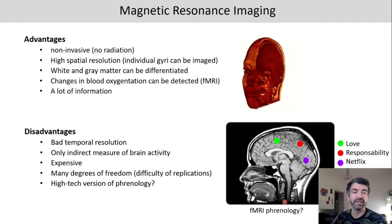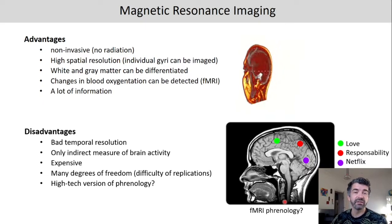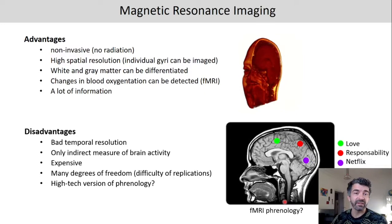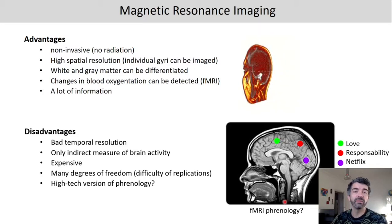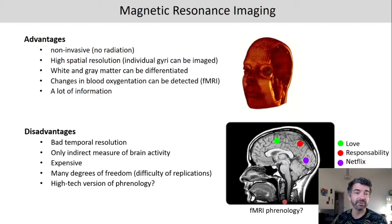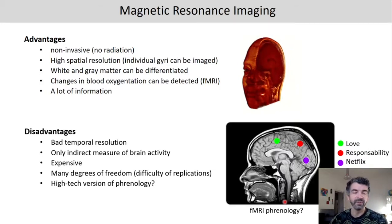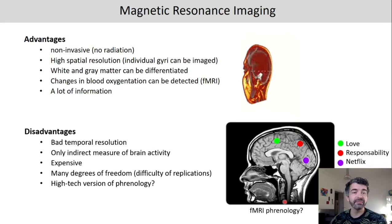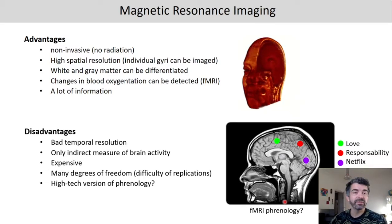Disadvantages of MRI are that we have bad temporal resolution. It is only an indirect measure of brain activity, meaning we're not looking at the activity of single neurons or neuron ensembles or even the summed activation of post-synaptic potentials like with EEG. Rather what we do is we look at how the blood flow responds to the brain activity or differences in the brain activity.